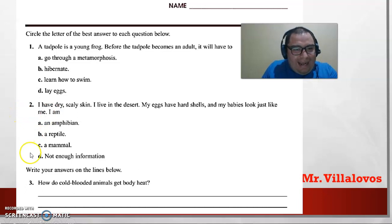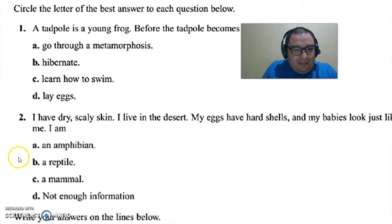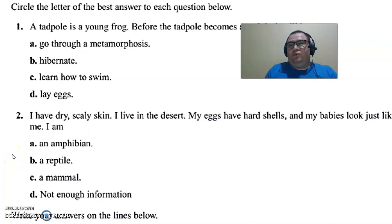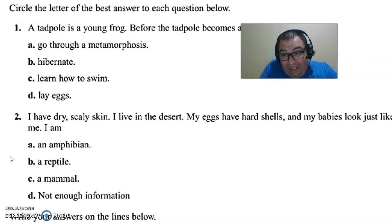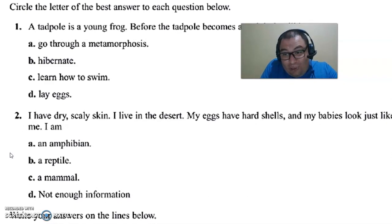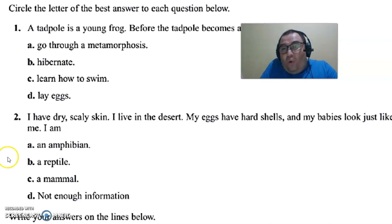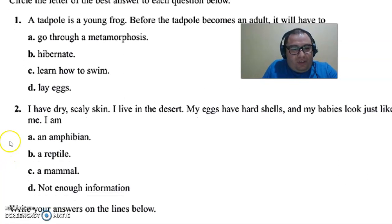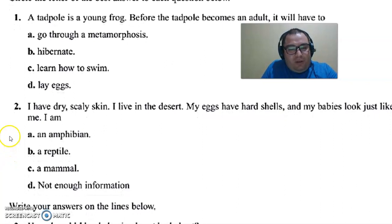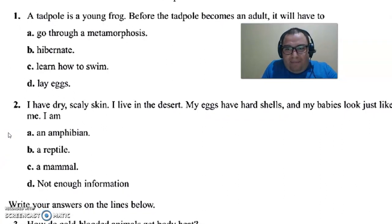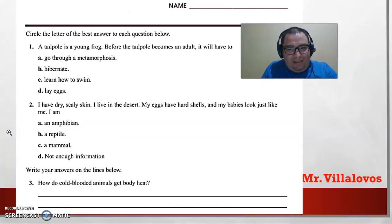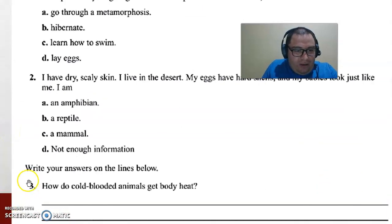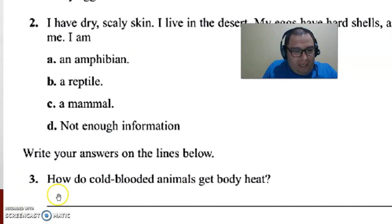Question two: I have dry, scaly skin. I live in the desert. My eggs have hard shells, and my babies look just like me. I am — option A: amphibian, option B: reptile, option C: mammal, option D: not enough information. The answer is obviously reptile.